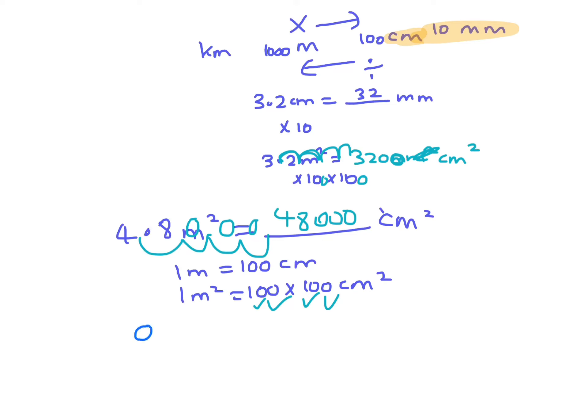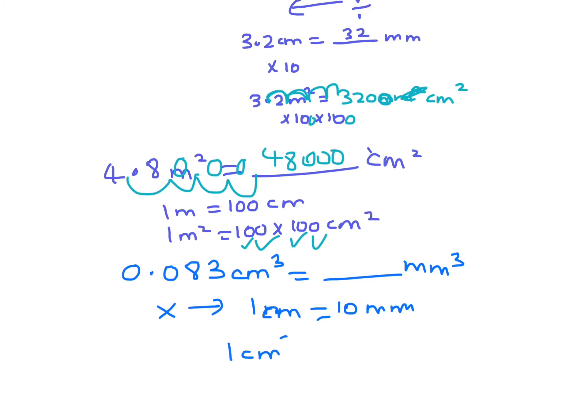And so I have 0.083 centimeters cubed and I'm going to change it to millimeters cubed. So centimeters to millimeters, that would be that way, so it's times. Now normally 1 centimeter is 10 millimeters. So when I'm doing cube units, 1 centimeter cubed would be 10 by 10 by 10 millimeters cubed. So you move the decimal point three places and you end up with 83 millimeters cubed. Because there's one decimal place movement going that way for every zero.